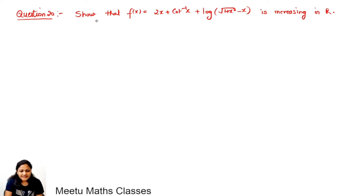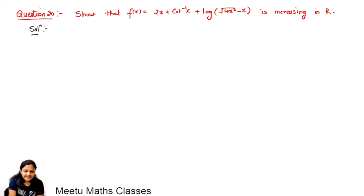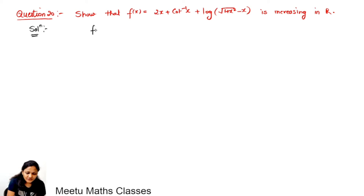It says: show that the function f(x) defined as 2x + cot⁻¹(x) + log(√(1+x²) − x) is increasing in the set of real numbers. So we have to check that this function is increasing on the set of real numbers. Let us consider the function: f(x) = 2x + cot⁻¹(x) + log(√(1+x²) − x).